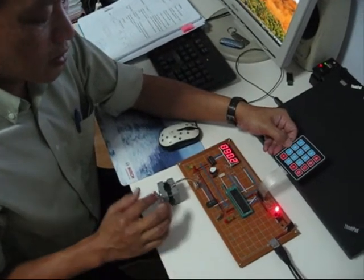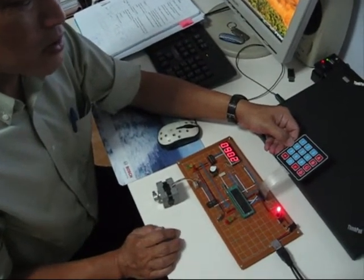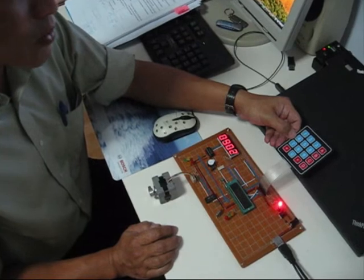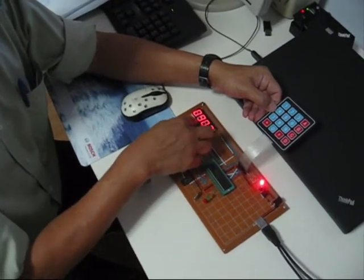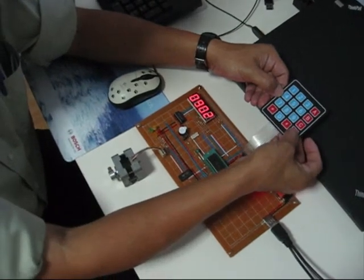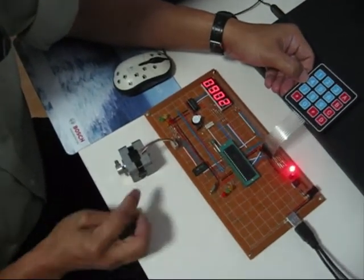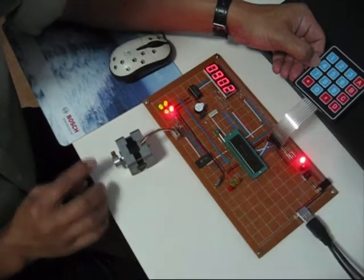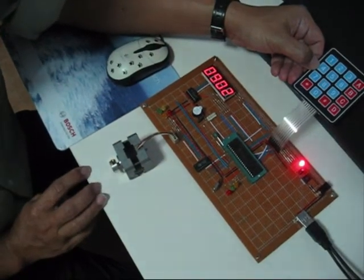Now I'll demonstrate how to change the angle rotation of this type of motor. Notice the default setting is 90 degrees. That means if I press D, it rotates 90 degrees.